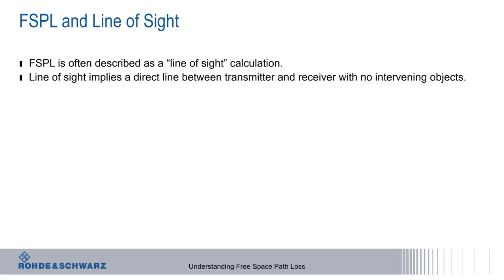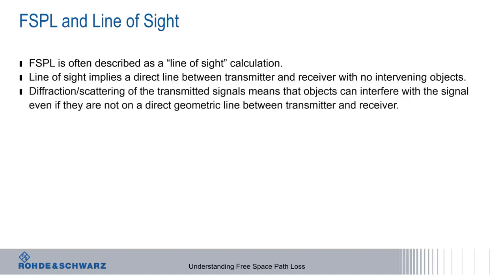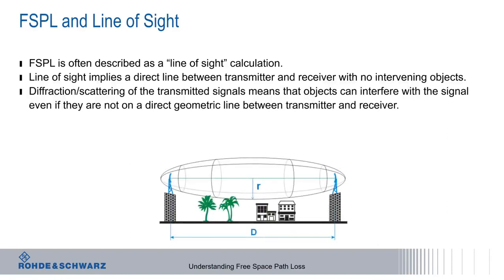Line of sight generally implies that there is a direct line between the transmitter and the receiver with no intervening objects. However, diffraction or scattering of signals means that objects can interfere with the signal even if they don't lie on a direct geometric line between transmitter and receiver. While this is uncommon in satellite systems, it does become a consideration in cases like terrestrial point-to-point microwave links.